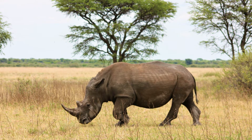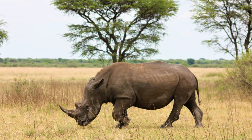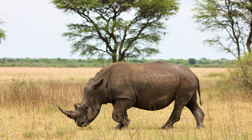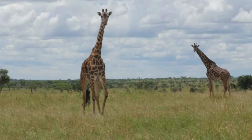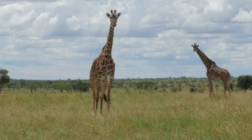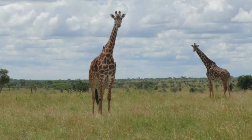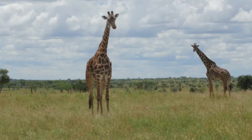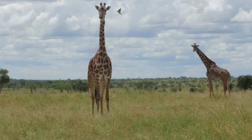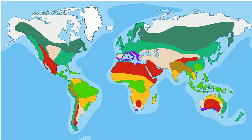Not enough rain falls on the savanna to support a forest. Savannas are also known as a tropical grassland. They are found on either side of the equator on the edges of the tropical rainforest. Savannas have warm temperatures year round.